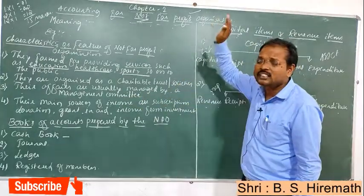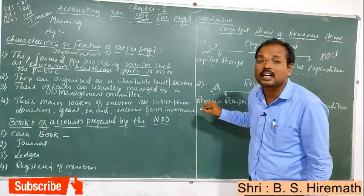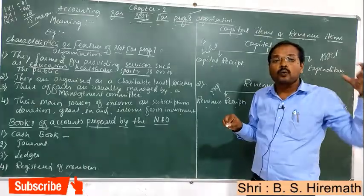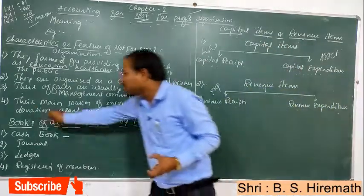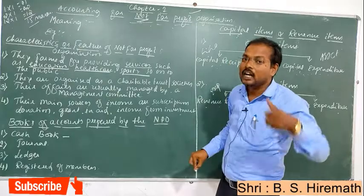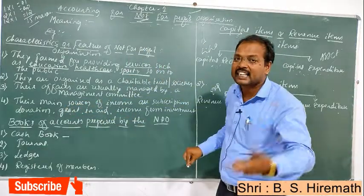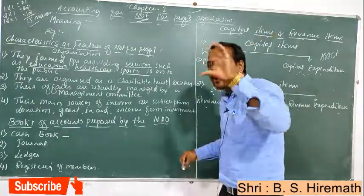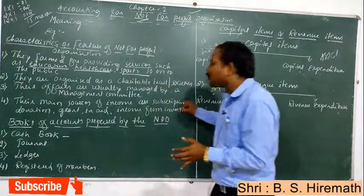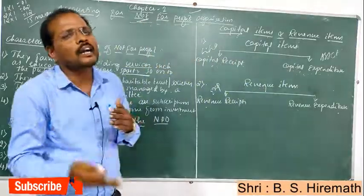Their main sources of income are: subscriptions received from members, donations from the public, grants-in-aid from the government, and income from investments.